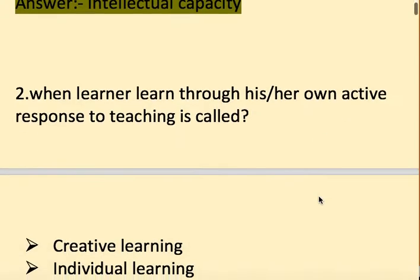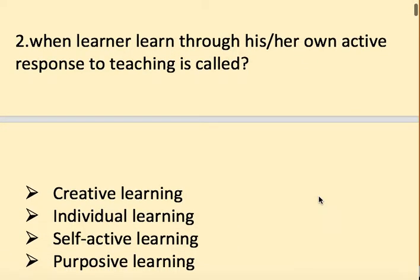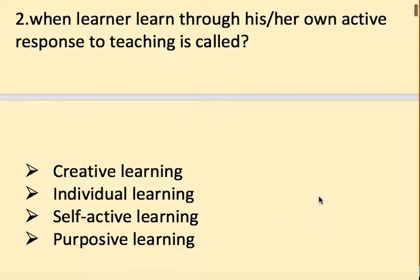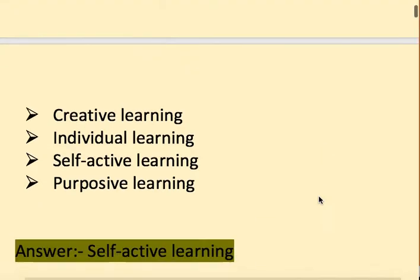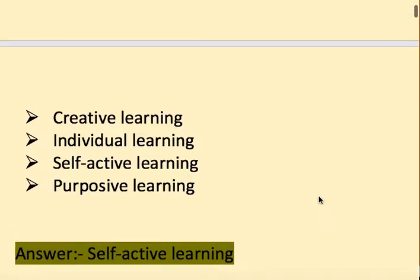Next question: When a learner learns through his or her own active response to teaching, it is called — options: creative learning, individual learning, self-active learning, and purposive learning. The right answer is self-active learning.